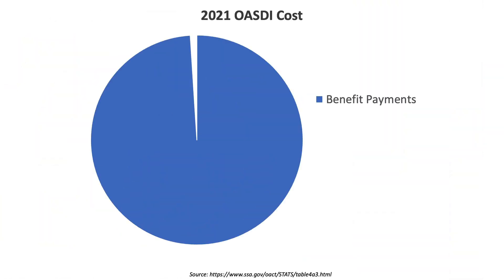Since we're talking about the income, let's break down the cost of the programs quickly too. The first and by far largest is the cost of benefit payments, which makes up 99% of the outflow from the trust fund. The remainder is about $6.5 billion in administrative costs — to pay the salaries for all the employees and for the offices, service centers, and so on. And then there's about $4.9 billion that's transferred back to the railroad retirement program from a 1951 agreement. So now you should have a better understanding of how Social Security is funded and the inside operations of the system.